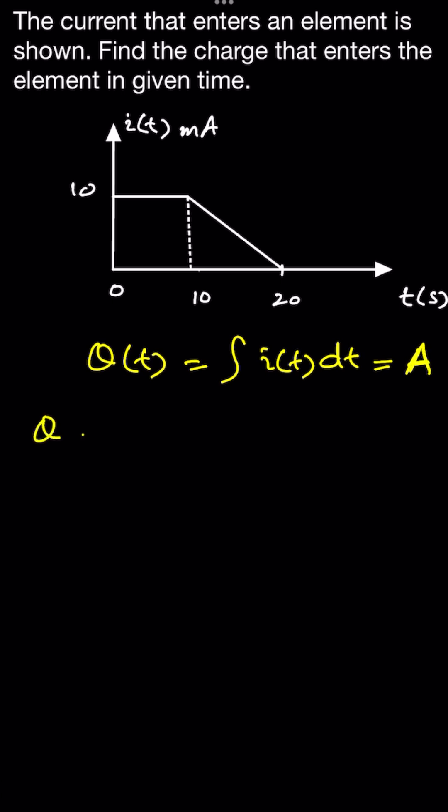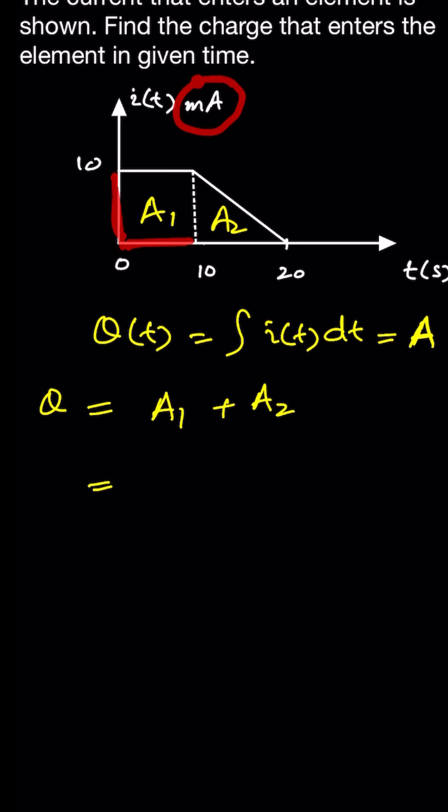So we can say that total charge is equal to area 1 plus area 2. Here it is given that the current is in milliampere. So 10 into 10, that will be 100 millicoulombs.